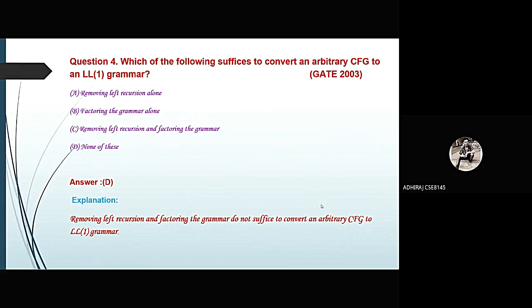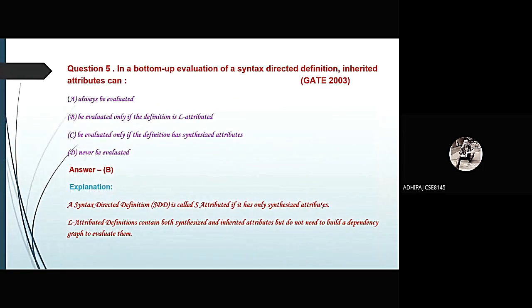Now the next question: in a bottom-up evaluation of a syntax directed definition, inherited attributes can: Option A — always be evaluated; Option B — be evaluated only if the definition is L-attributed; Option C — be evaluated only if the definition has synthesized attributes; Option D — never be evaluated. This question came from GATE 2003. The correct option is B, because a syntax directed definition is called S-attributed if it has only synthesized attributes. L-attributed definitions contain both synthesized and inherited attributes but do not need to build a dependency graph to evaluate them.